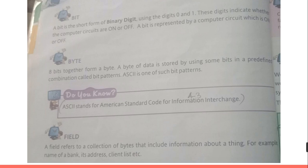Data in a computer is stored in the form of bits and bytes. A bit is a character because a computer only understands the machine language or binary language. The binary language is made up of only two characters: 0 and 1. So a bit is either a 0 or 1 — these are called binary digits. When eight binary digits are combined together, they make a byte, which is equal to a single character.